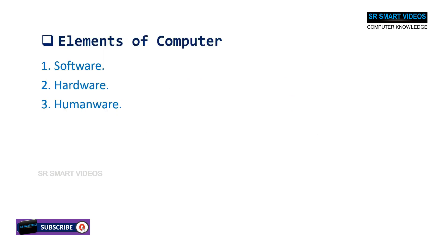A computer is made up of different elements. These elements make the computer work. The computer has three elements: software, hardware, and humanware. All these elements are very important for the computer. This section explains the elements of a computer in detail.